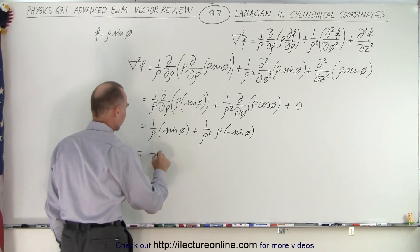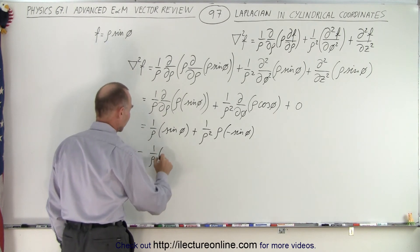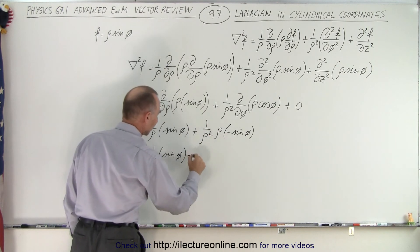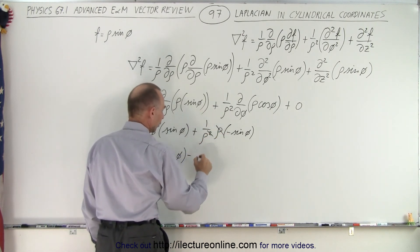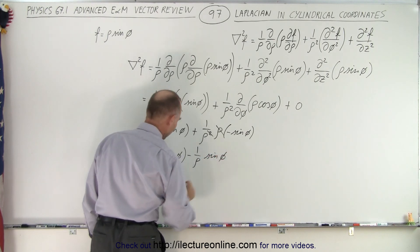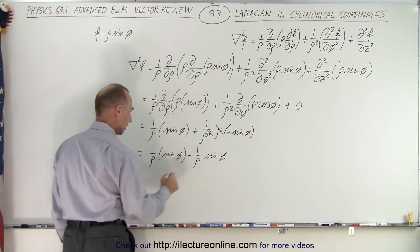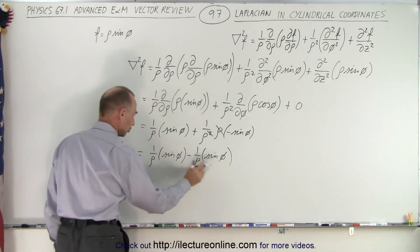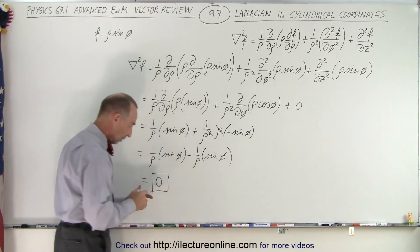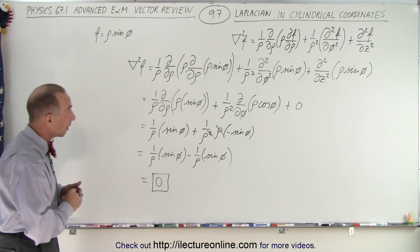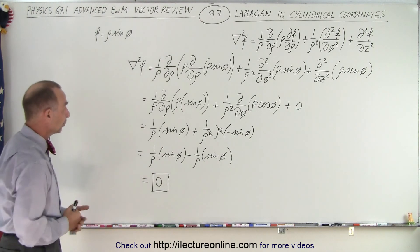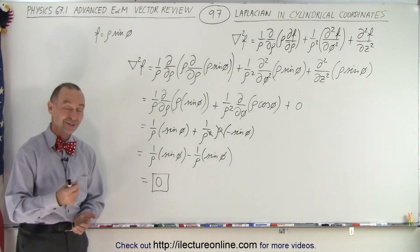Simplifying, we end up with 1 over rho times sine of phi, and here we have a minus, and the rho cancels, giving 1 over rho times sine of phi. The two terms are identical with opposite signs, so they cancel out, and we simply get 0. The Laplacian of that particular scalar function is 0 after all that work. That is how it's done.